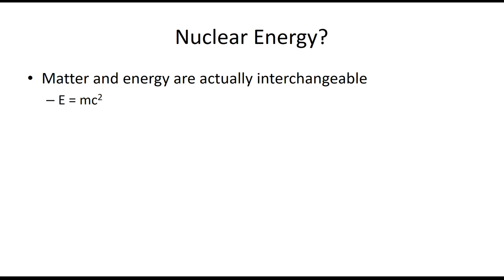On an esoteric level, understanding nuclear energy requires us to understand that matter and energy are actually interchangeable. The conservation of mass principle could more accurately be called conservation of mass and energy, because in nuclear reactions we can actually convert matter into pure energy — some of the actual particles making up a nucleus are converted to pure energy.